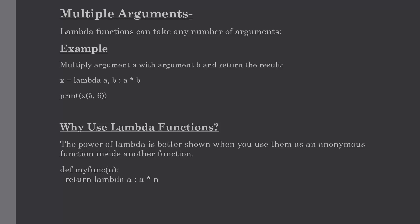You might ask why we use lambda functions. The power of lambda will be better shown when we use it as an anonymous function inside another function. In this example, a function definition takes one argument and that argument will be multiplied with an unknown number — we pass one argument and multiply it with the anonymous number.